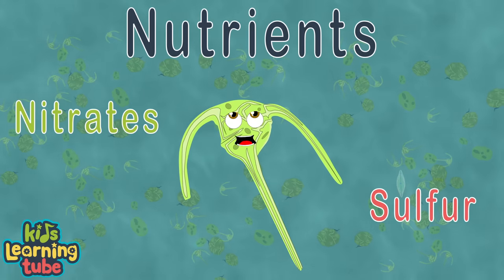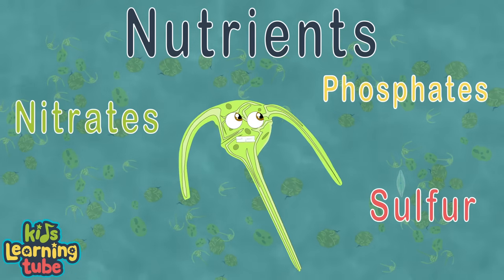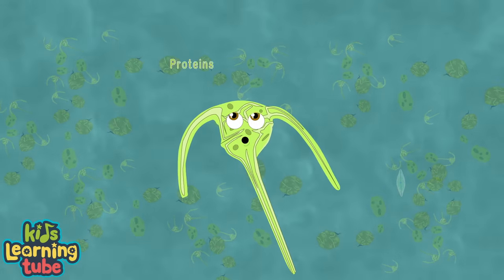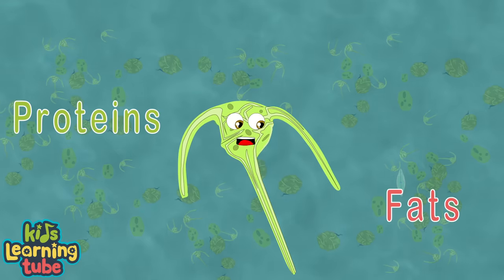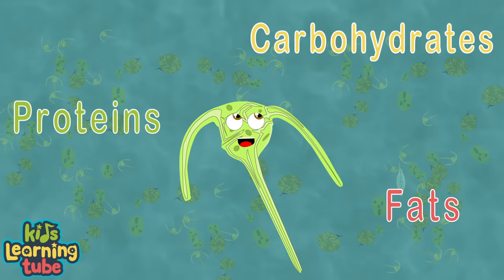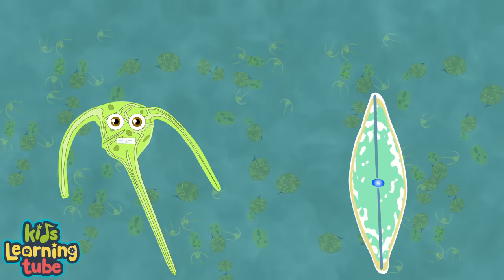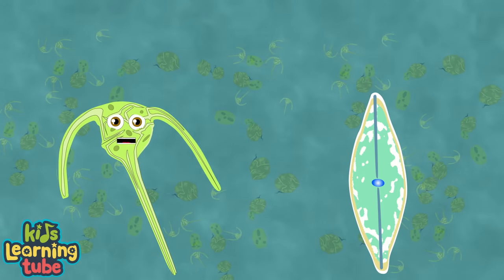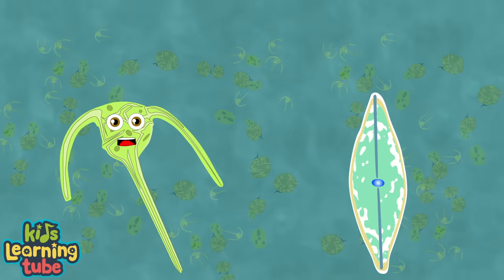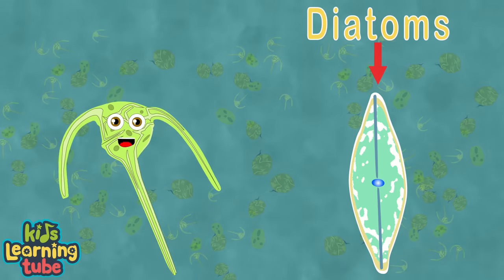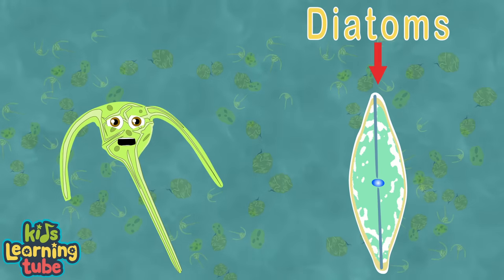We require nutrients such as nitrate, sulfur, and phosphate, which we use to convert into protein, fats, and carbohydrates. There are two main classes of phytoplankton: the first are diatoms, and the second are dinoflagellates.